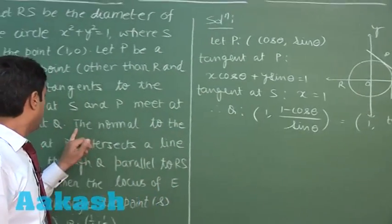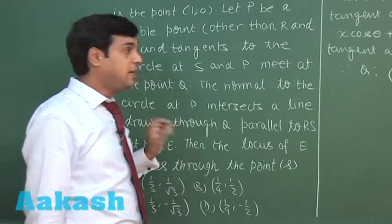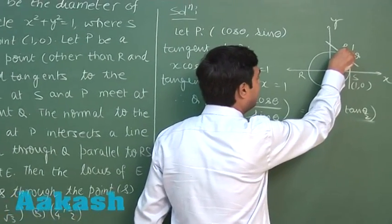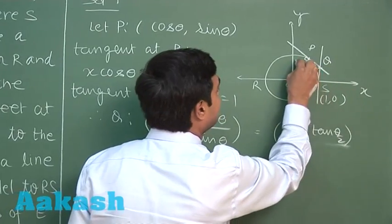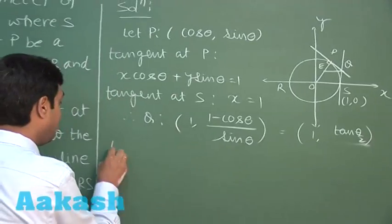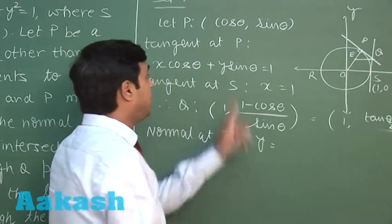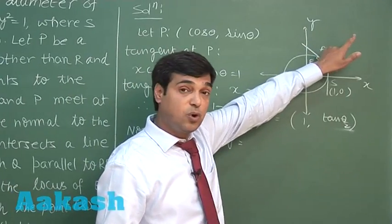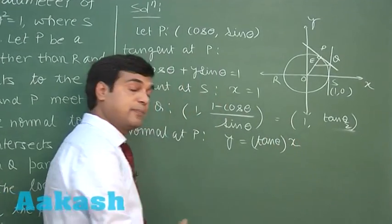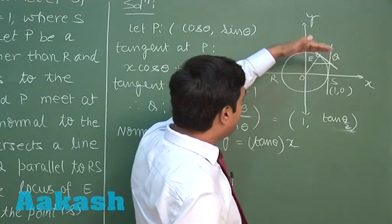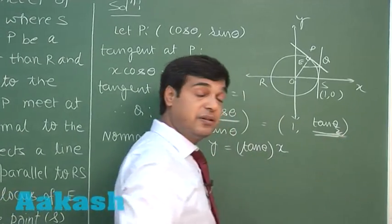The normal to the circle at P intersects a line drawn through Q parallel to RS at point E. The normal at point P = (cos θ, sin θ) has slope sin θ/cos θ = tan θ, so the normal is y = tan θ · x. The line through Q parallel to RS is a horizontal line y = tan(θ/2), since RS is along the x-axis.